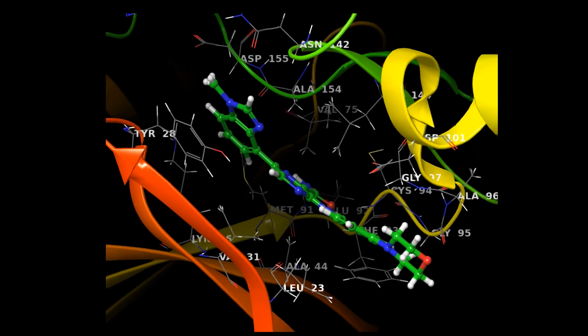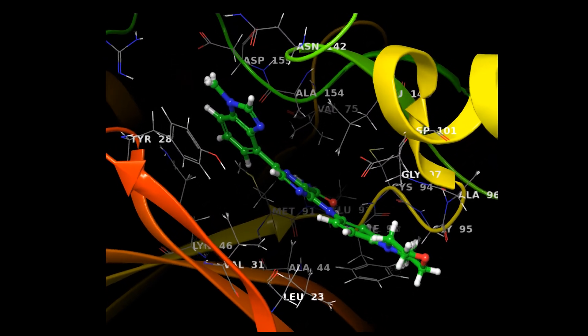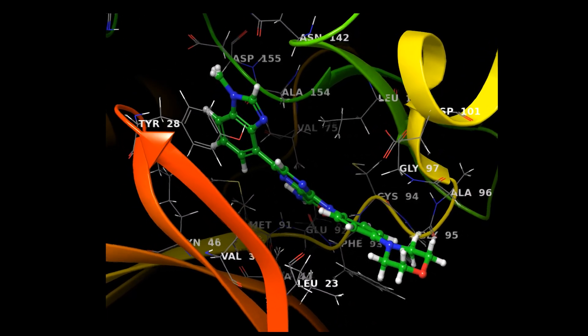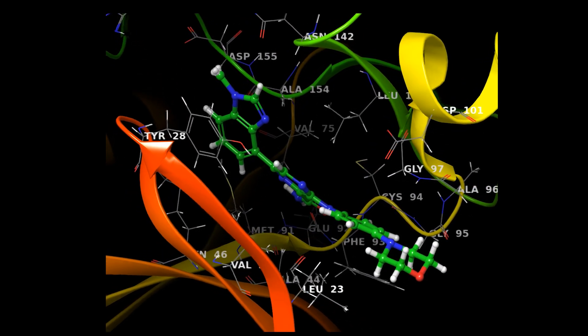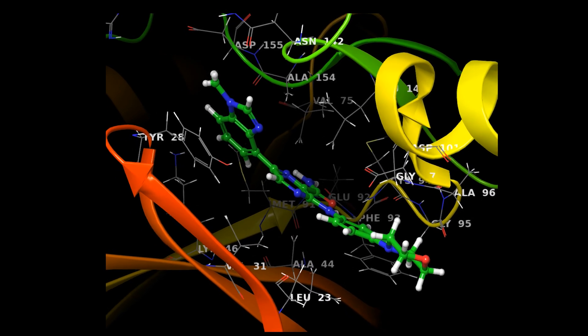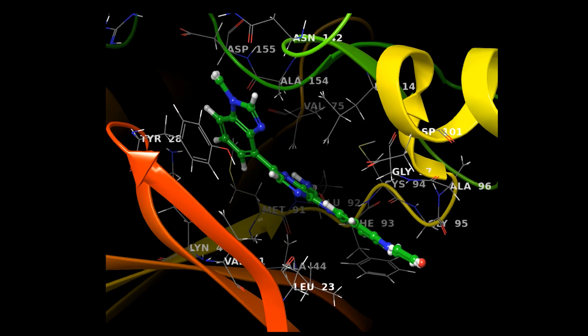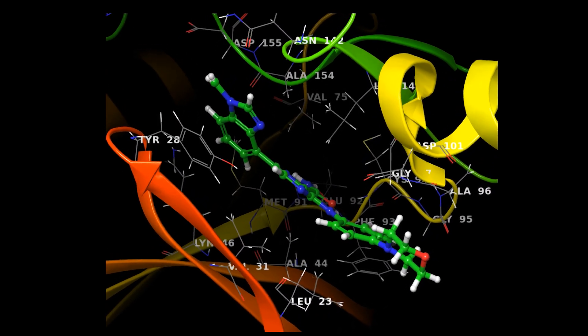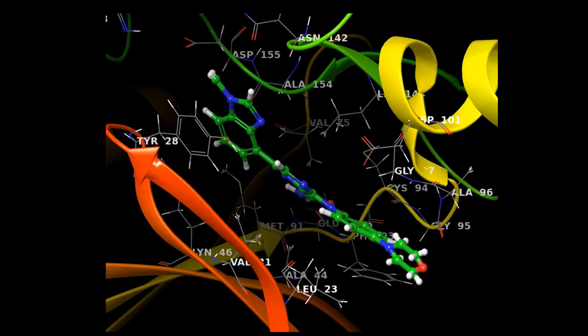We noticed a few key anchors holding it there. One was a hydrogen bond, basically a tiny chemical handshake between the drug and a part of the protein. That handshake stayed solid throughout the simulation, telling us it's a crucial grip. Around it, water-fearing, hydrophobic parts of the protein were hugging the hydrophobic parts of the drug. Think of it as the classic oil and water scenario. The oily parts of the protein and the oily parts of the drug glom onto each other to avoid water, which helps lock the drug in place.